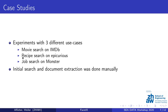In order to see how well this approach would work in production, we tried three different use cases in three different domains. The first was a movie search on the international movie database, the second was a recipe search on Epicurious, and the third was a job search on monster.com. The initial search and document extraction was done manually by us, but of course if this were integrated into a system, there would be no need for manual action.